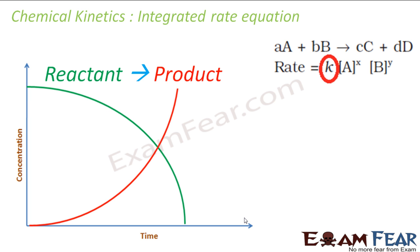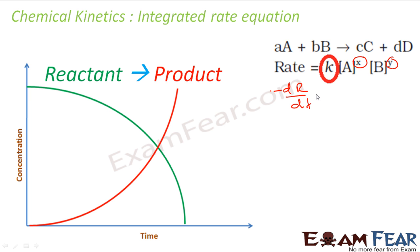We have seen that for a reaction A + B = C + D, the rate is nothing but k·[A]^x·[B]^y. These are experimental values. And rate is nothing but minus d[R]/dt.